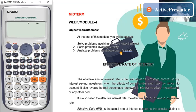Hello guys, welcome to our class. For our midterm, week module 4, we have objectives or outcomes. At the end of this module, you will be able to: first, solve problems involving effective rate of interest; second, solve problems involving annuity; and third, analyze problems involving types of annuity.